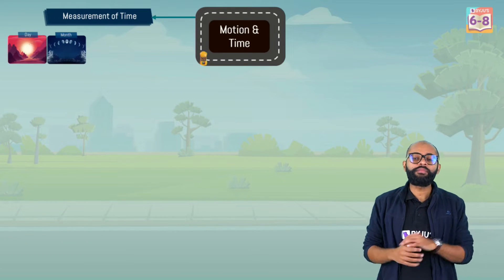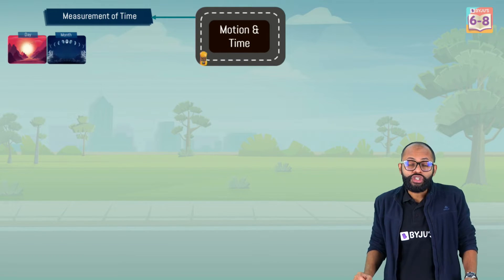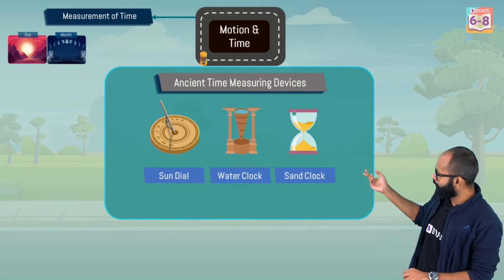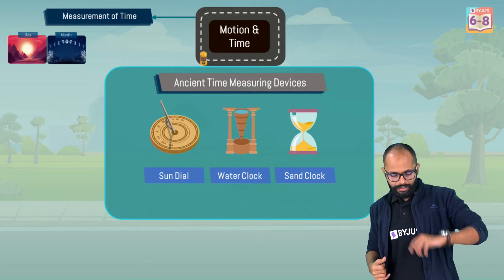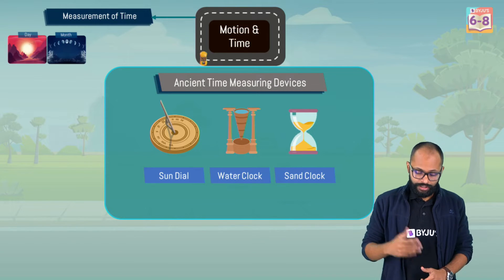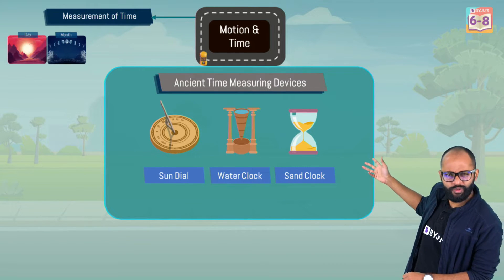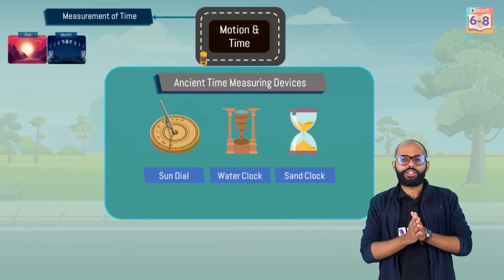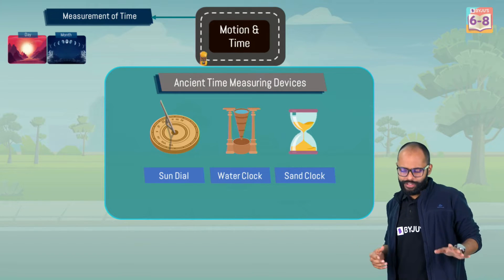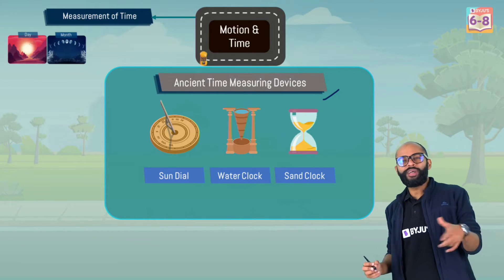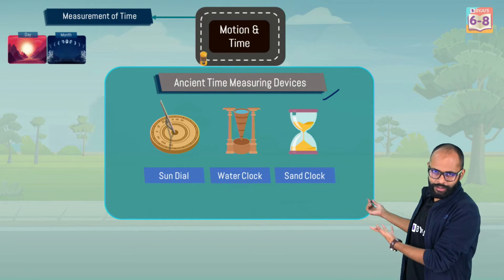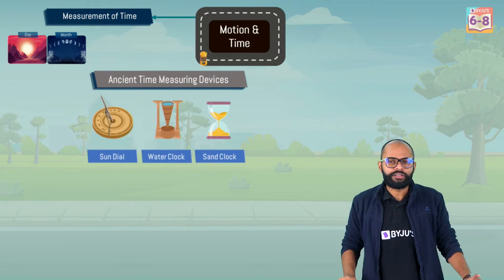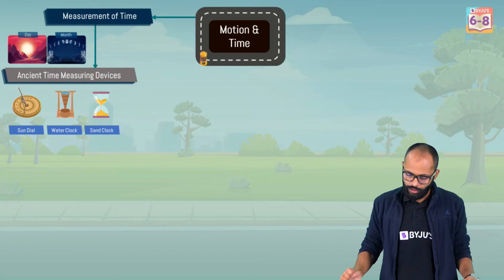Based on this, we made some devices — ancient time measuring devices. One was called the sundial, which was based on shadow. Apart from this, there was a water clock and a sand clock. You might have seen sand clocks in Egyptian movies too. How will the question come? Like: name two ancient time measuring devices. Sundial, water clock, and sand clock — these are three examples for you, more than enough.